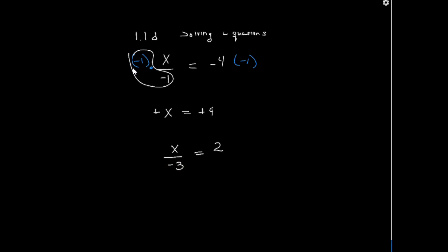I can multiply both sides of that equation by negative 3, and again, negative 3 over negative 3 equals positive 1, and I get x equals negative 6.